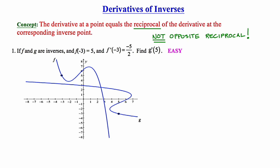Let's take a look at example one. If f and g are inverses, and f of negative 3 equals 5, and the derivative of f at negative 3 equals negative 5 halves, find the derivative of g at 5. I've also provided the graphs of f and g. The graph of f I will highlight in green, and the graph of g I'll highlight in purple.